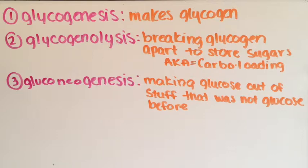Other oxidations of glucose are glycogenesis, which is the making of glycogen. Glycogenolysis, which is breaking glycogen apart and storing sugars, a.k.a. carb loading. Gluconeogenesis, which is making glucose out of stuff that was not glucose before.